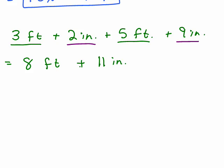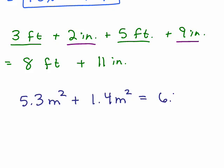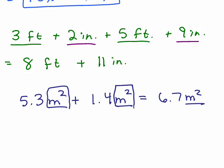We'd have 8 feet 11 inches, and the way we're doing this algebraically is we're adding them together. Now they don't have to be whole numbers — you still are just going to combine the coefficients. So let's say you had 5.3m squared plus 1.4m squared. These are like terms because they're both m squared, so I add 5.3 and 1.4 to get 6.7m squared.